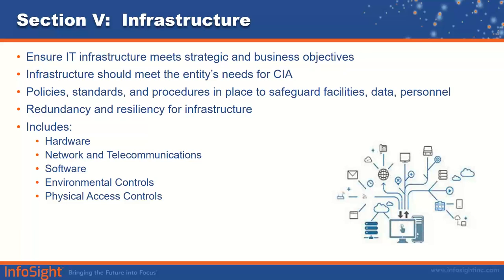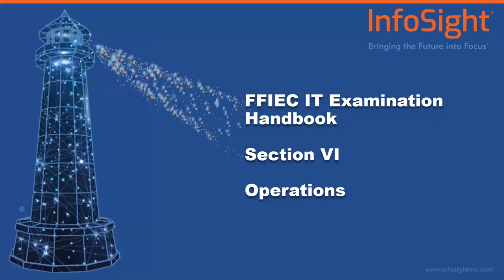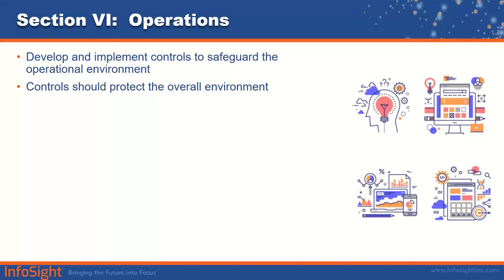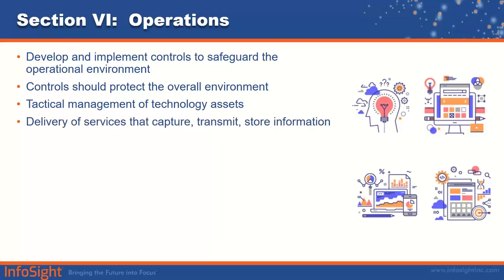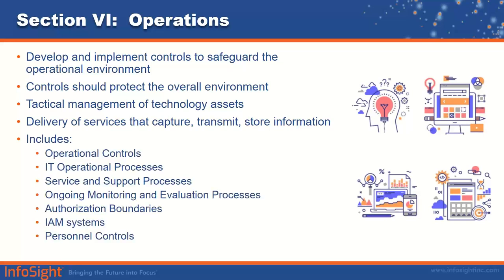There is also information related to closed and open source software in the AIO booklet. For operations, an entity needs to develop and implement controls for the operational environment, including controls for the tactical management of technology assets, and the delivery of services that capture, transmit, and store information. This includes operational controls and processes, service and support processes, ongoing monitoring and evaluation processes, authorization boundaries and identity access management systems, and personnel or HR controls, hiring practices, and controls on personally owned devices.